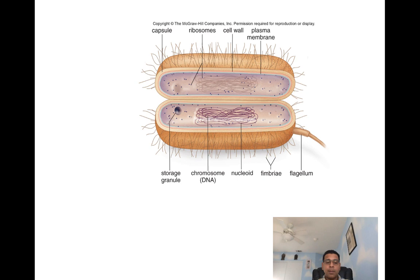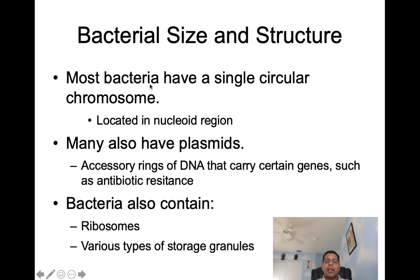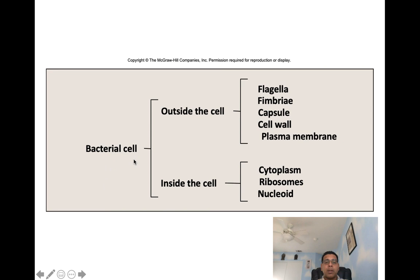Most bacteria have a single circular chromosome located in the nucleoid region, and many have a plasmid — an accessory ring of DNA that carries certain genes such as antibiotic resistance. Bacteria also contain ribosomes and various types of storage granules.